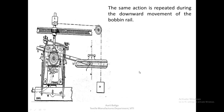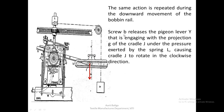The similar action happens when the bobbin rail is moving downward. The same action is repeated during the downward movement. As it is moving down, screw B releases pigeon lever Y, which is engaging with projection G of cradle J, under the pressure exerted by spring L.